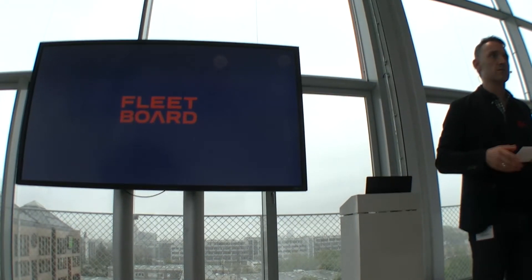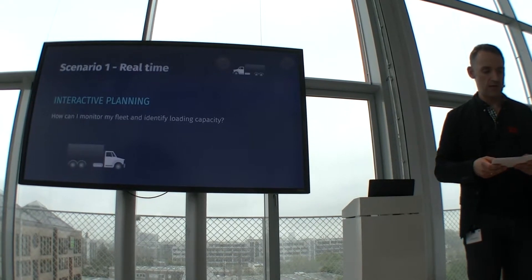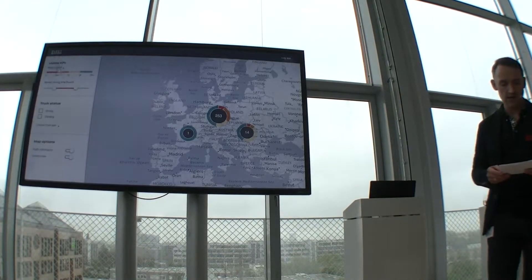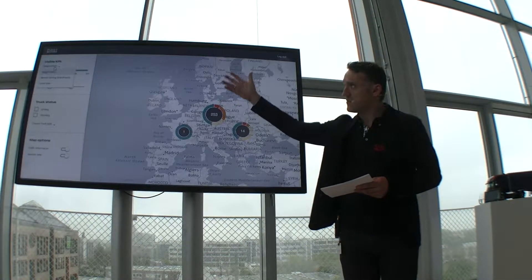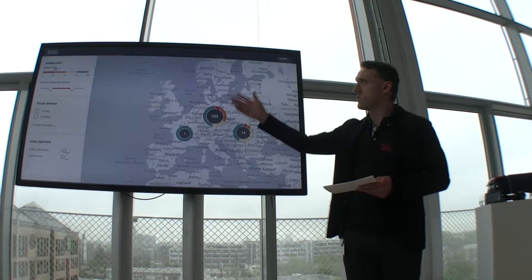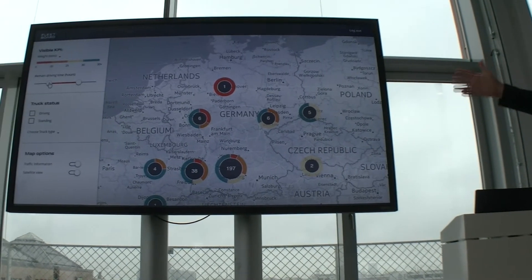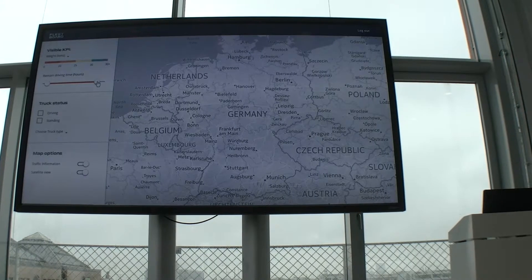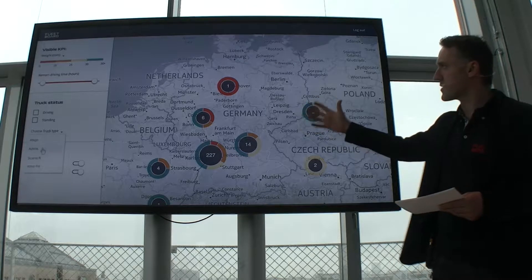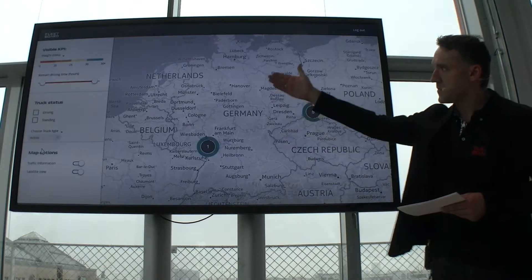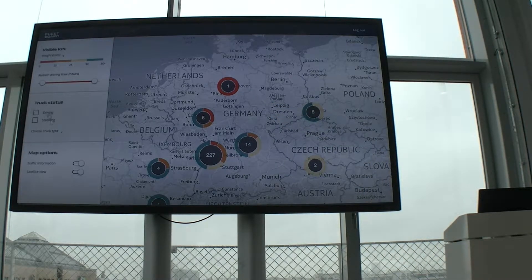The first use case is about real-time data. How can I monitor my fleet and identify load capacity? You can see different attributes you can select from — for example, how much weight can be loaded in a truck. On the right-hand side you see a map. You can scroll down through different truck types, because the truck type is important for dispatching.